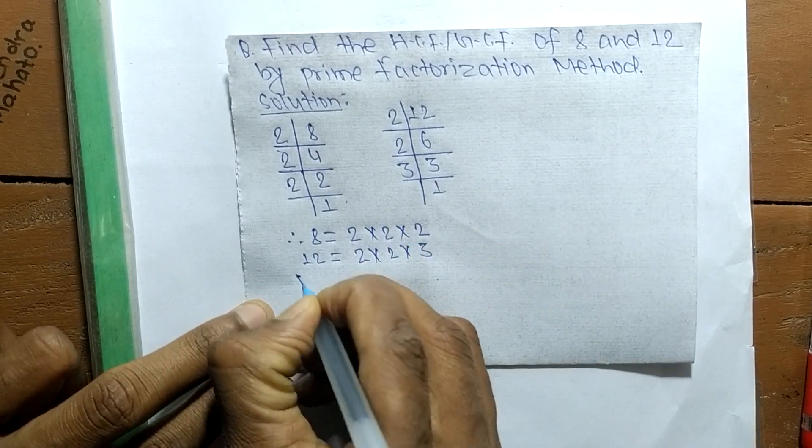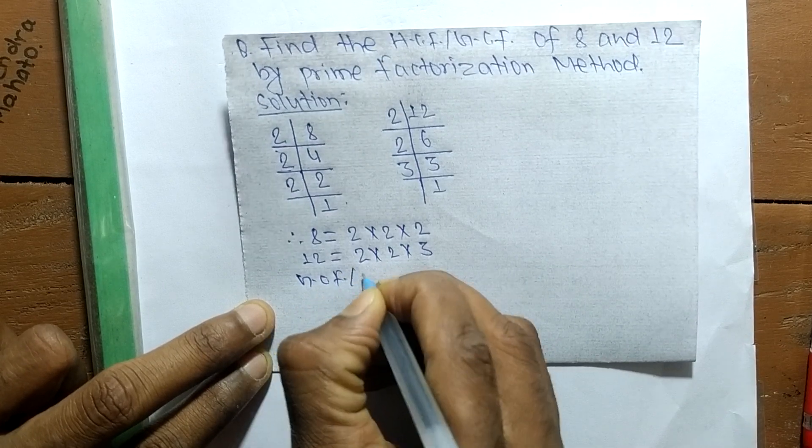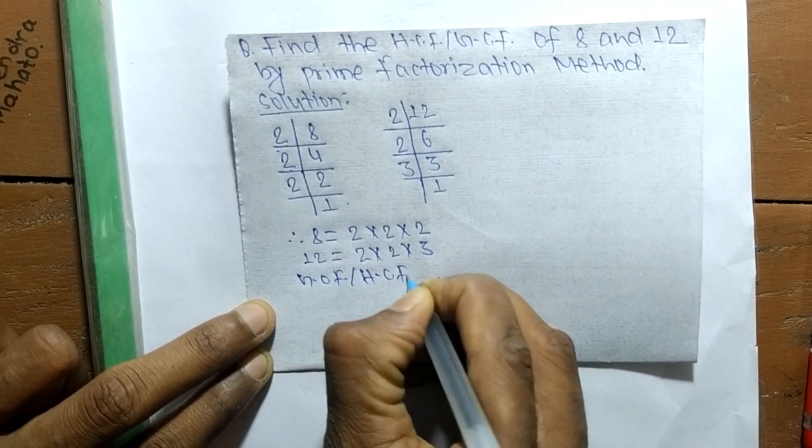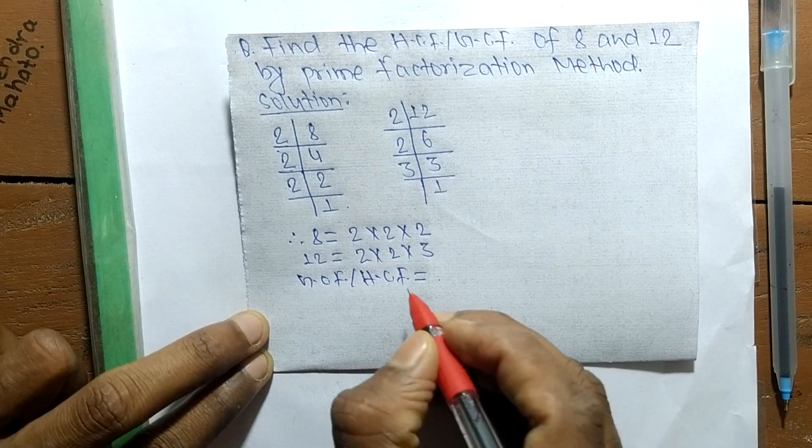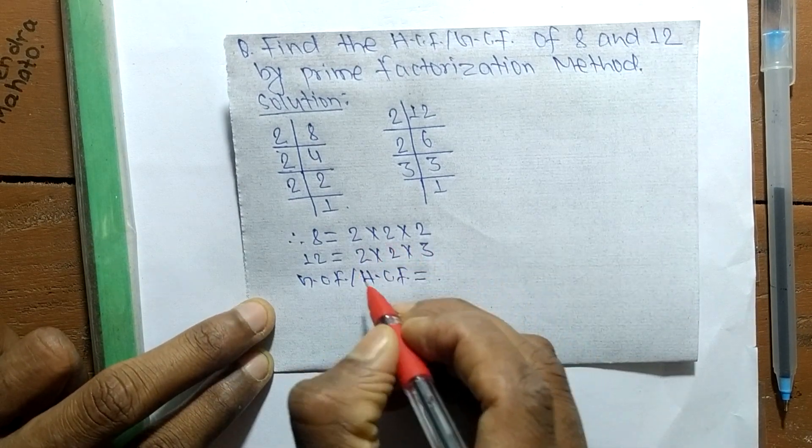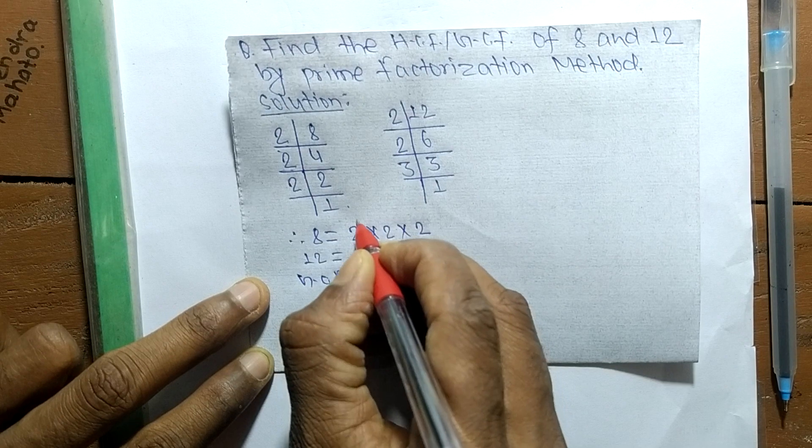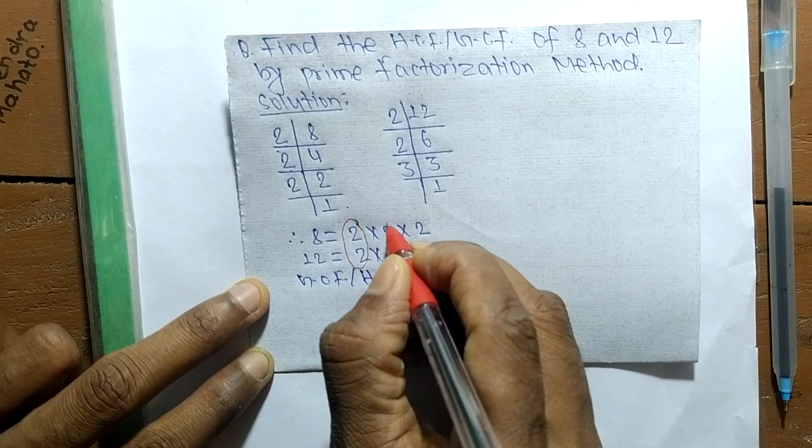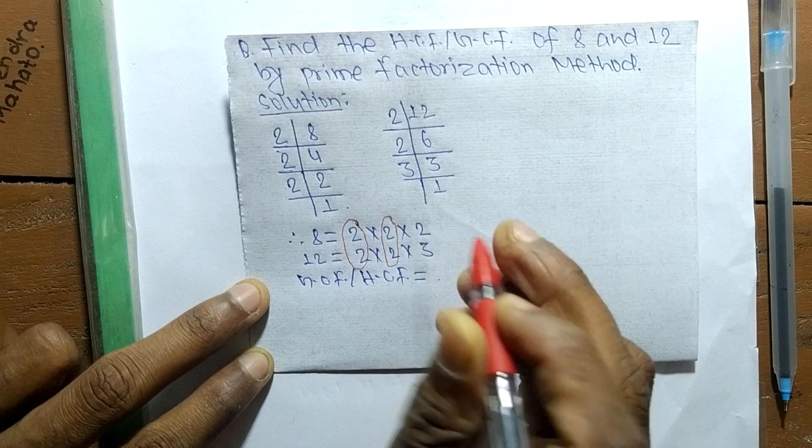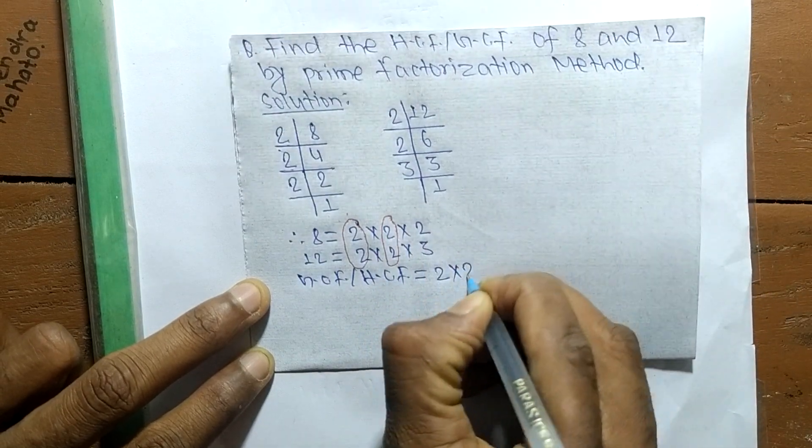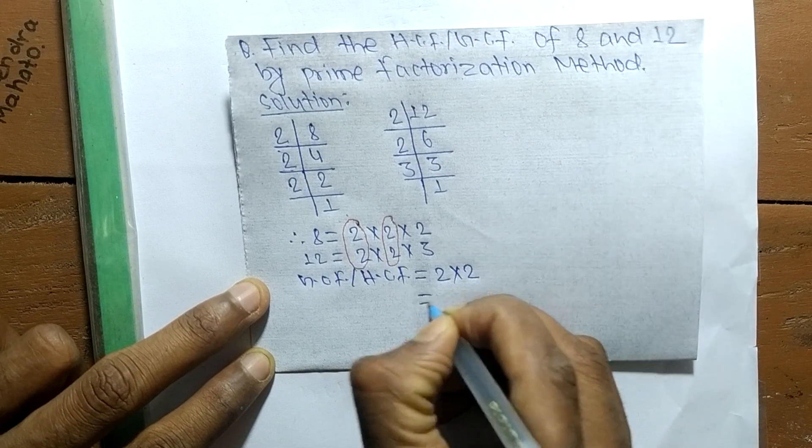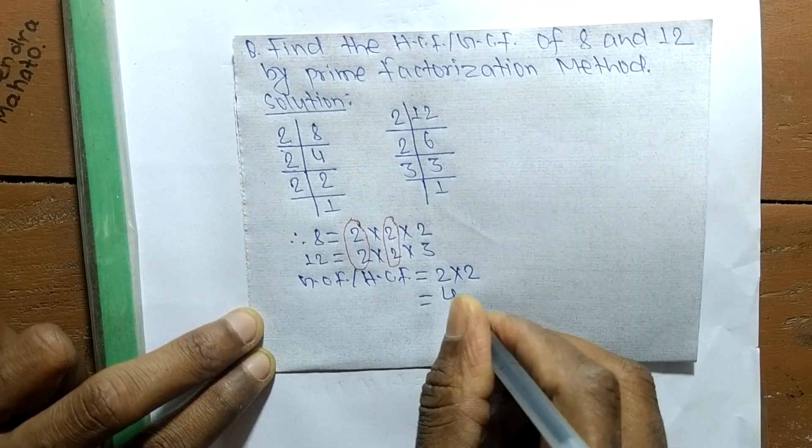Now, the GCF or HCF is found by identifying the common elements in these prime factors. The first common element is 2, and the second common element is also 2. So it equals 2 times 2, which is 4.